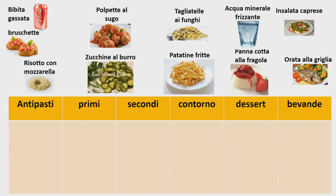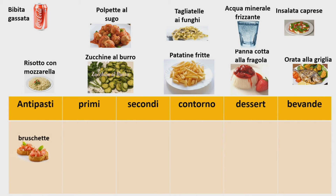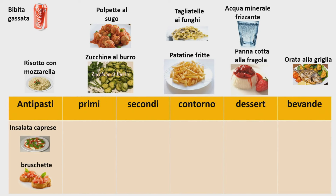Nella lista avete: bibita gassata, bruschette, risotto con mozzarella, polpette al sugo, zucchine al burro, tagliatelle ai funghi, patatine fritte, acqua minerale frizzante, insalata caprese, panna cotta alla fragola, orata alla griglia. Cominciamo con gli antipasti: le bruschette e poi anche l'insalata caprese. Questi si mangiano come antipasto all'inizio del pranzo oppure della cena.